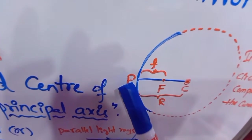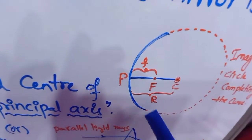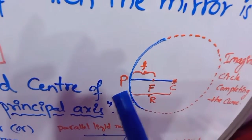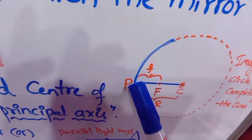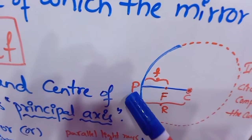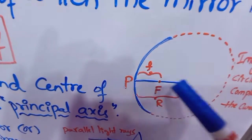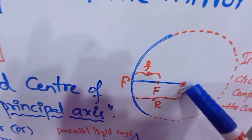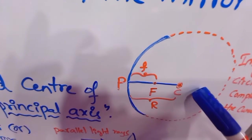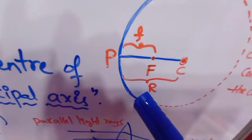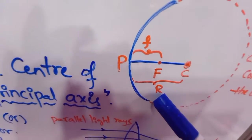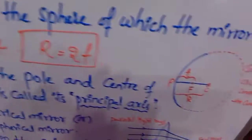The pole is the midpoint of the curve — that is, it is the geometrical center of the mirror. It is denoted by the letter P. So C is the center of curvature, P is the pole, and the distance between the pole and the center of curvature is known as the radius of curvature, denoted by capital R. I have also written here that R is equal to 2f — we will see what F and f indicate.